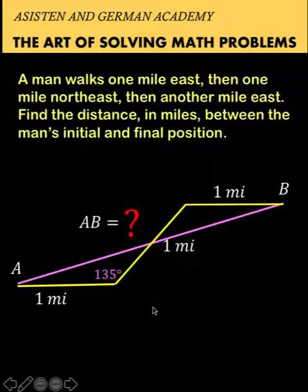Hi everyone, here's our math problem for today. Starting at point A, a man walks one mile east, then one mile northeast, then another one mile east up to point B. Find the distance in miles between the man's initial and final position. We want to find the length of segment AB.